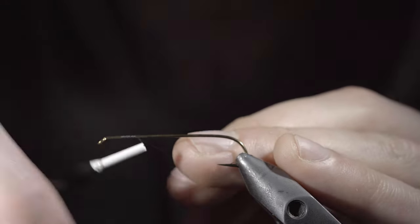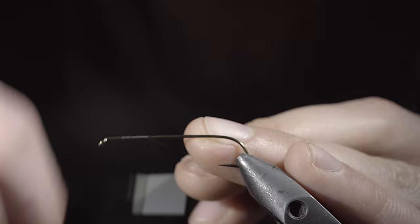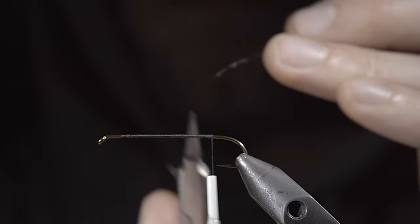We're going to be tying up a unique streamer that was inspired by Carrie Stevens' Green Hornet. To start, we'll secure some black thread to our hook shank, snip the excess free, and continue wrapping to the back of the hook.